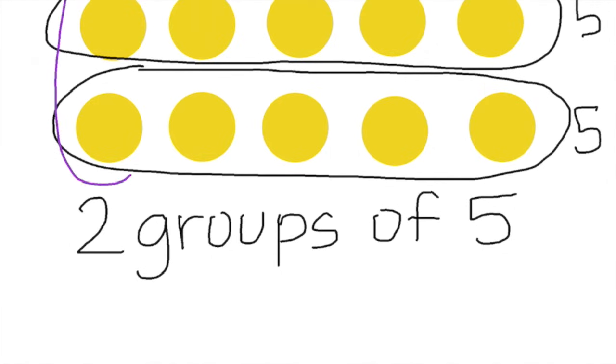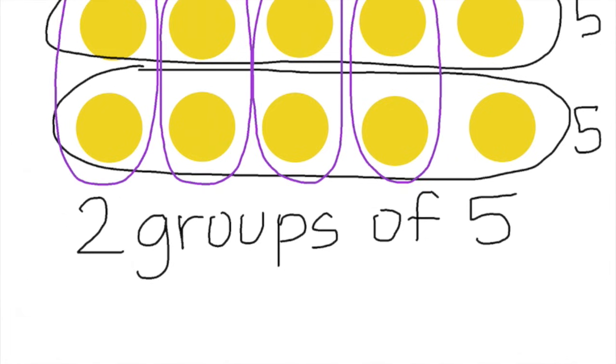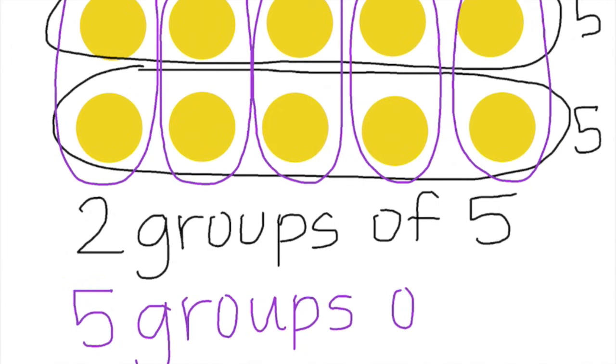We also have columns. And remember that they have to be equal in our rows and our columns. So in purple, we can see that we have one, two, three, four, five groups of two in each group.